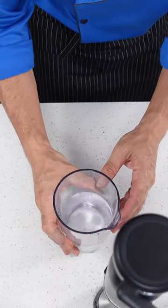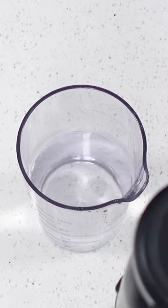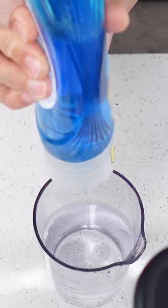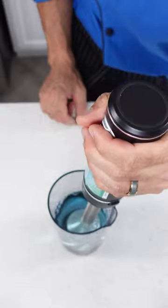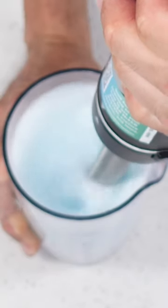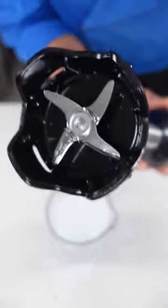To get this clean, all you got to do is take a tall measuring cup, fill it halfway up with hot water from your tap, throw in a little Dawn dish soap, put the immersion blender in all the way down to the bottom, and then just run it for about 30 seconds. Once you're done, it'll be nice and clean.